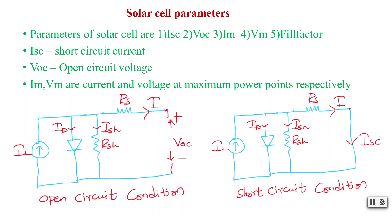Hello everyone, thanks for tuning into this video. In this video let us see solar cell parameters. The main important parameters of solar cell for analyzing its performance are: short circuit current Isc, open circuit voltage Voc, current Im and voltage Vm — these correspond to the maximum power point — and finally fill factor. These are the five solar cell parameters.